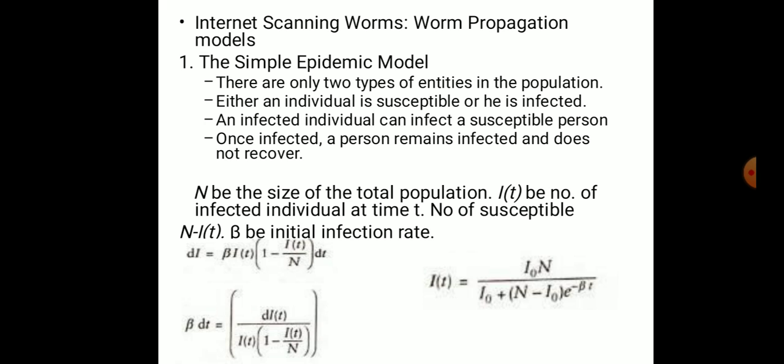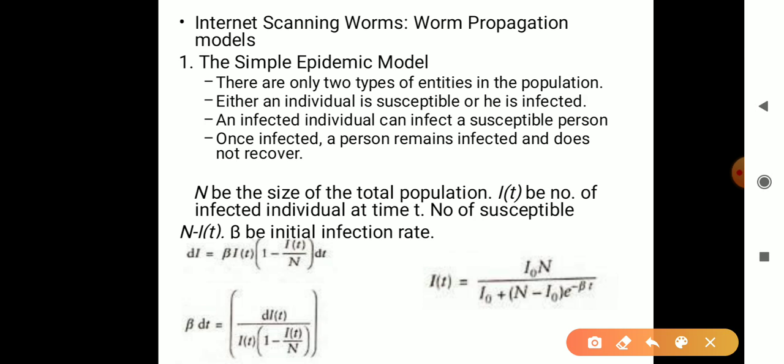The first one is the simple epidemic model. In this one, it is the same like how diseases are being spread. There are two individuals they have been taking: one is susceptible and the other one is infected. The two states they are going to take it from the suspected to the infected.